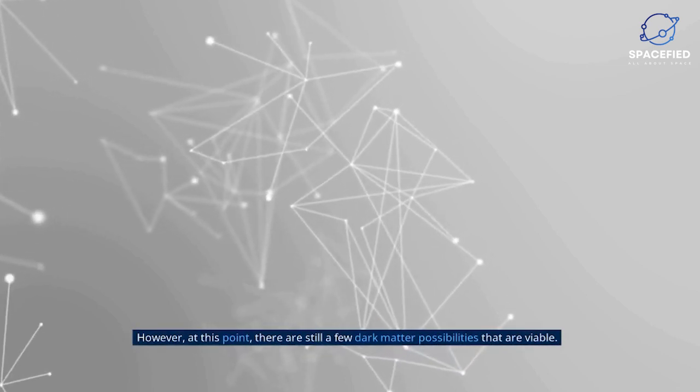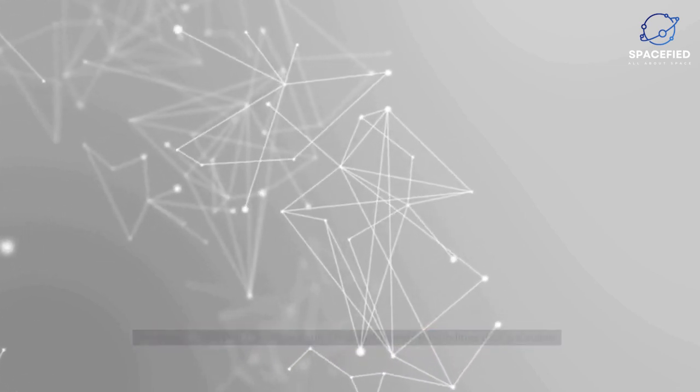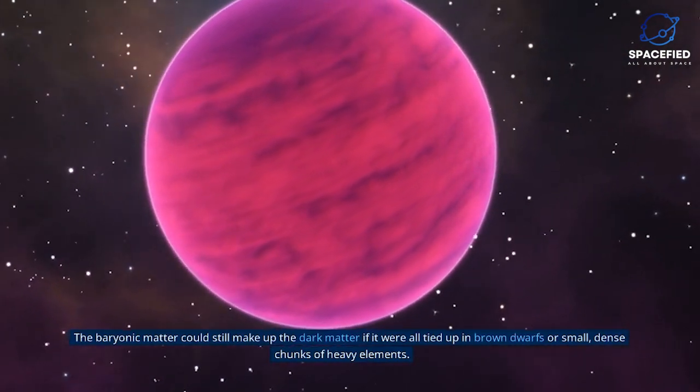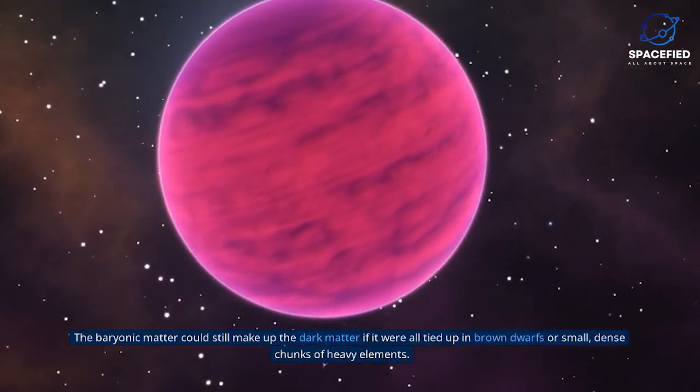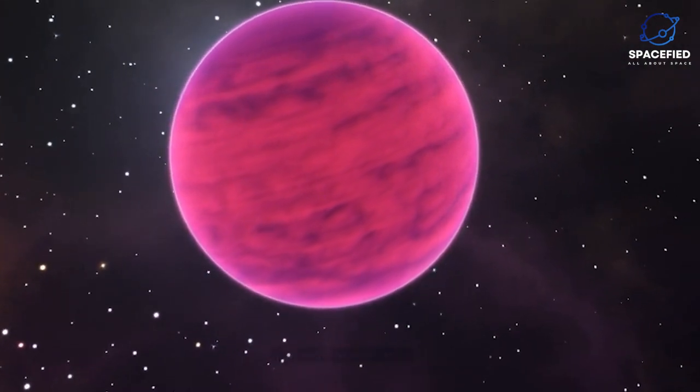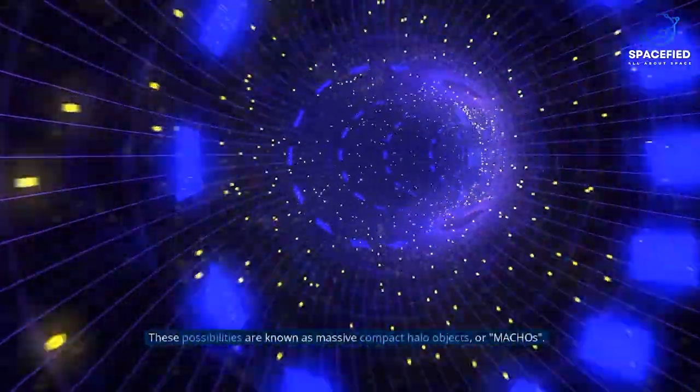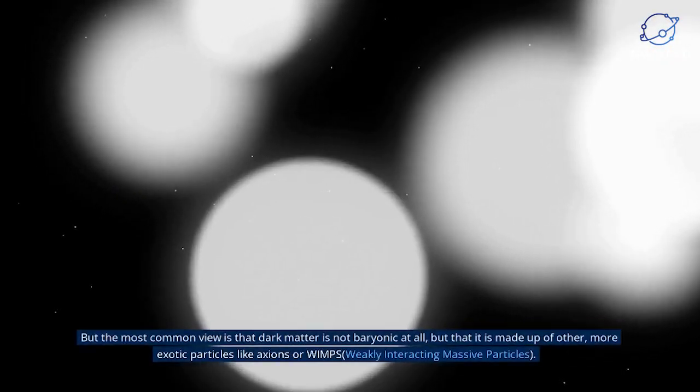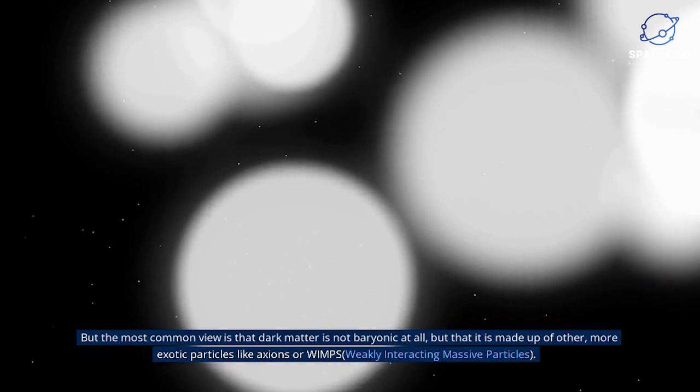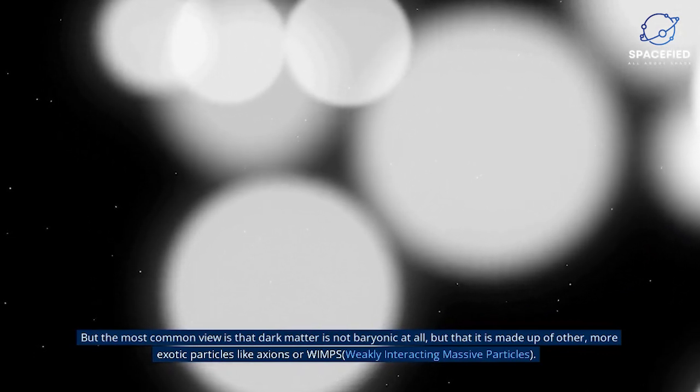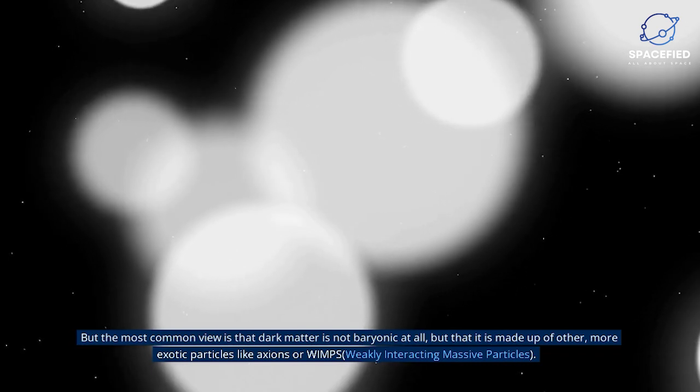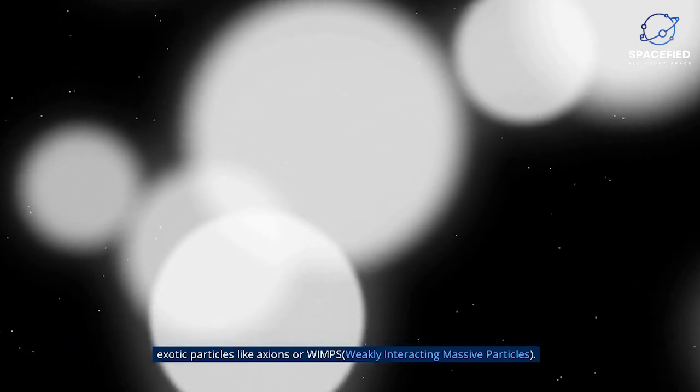However, at this point, there are still a few dark matter possibilities that are viable. The baryonic matter could still make up the dark matter if it were all tied up in brown dwarfs or small, dense chunks of heavy elements. These possibilities are known as massive compact halo objects, or MACHOs. But the most common view is that dark matter is not baryonic at all, but that it is made up of other, more exotic particles like axions or WIMPs, weakly interacting massive particles.